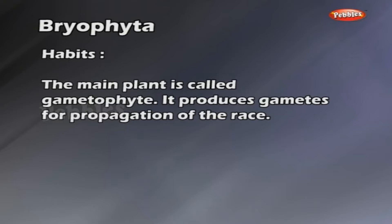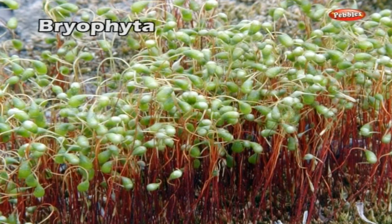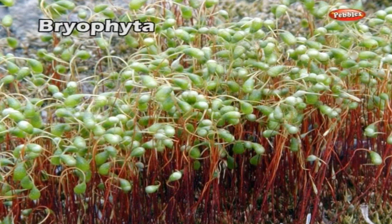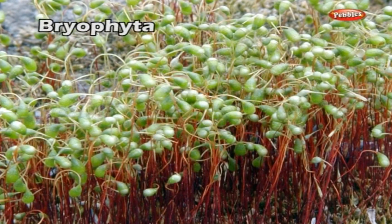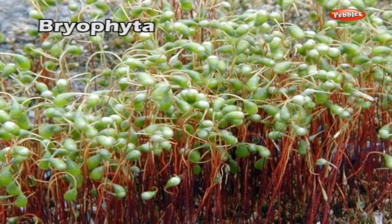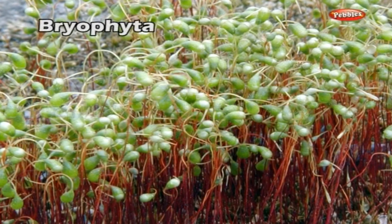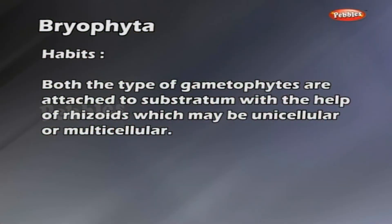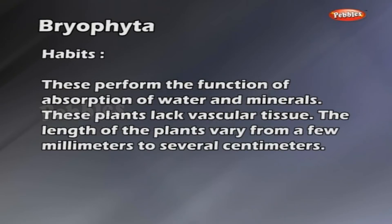The main plant is called the gametophyte. It produces gametes for propagation of the species. It is a green thallus, as in Marchantia, or it may be differentiated into rhizoids, stem-like structure and leaf-like structure, for example Funaria. Both types of gametophytes are attached to the substratum with the help of rhizoids, which may be unicellular or multicellular.